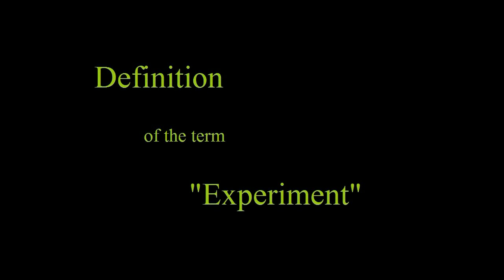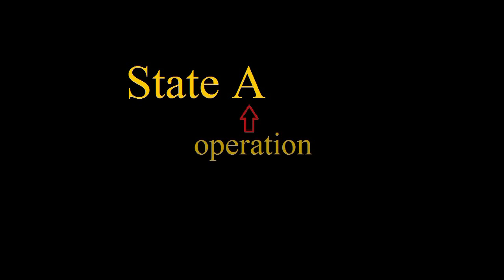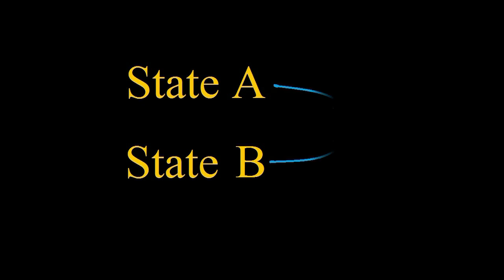The definition and logical rules of any experiment are as follows. A state A exists. An operation is performed on state A, transforming it into state B. Both states A and B are compared to a standard X, which is not functionally attached to the experiment.